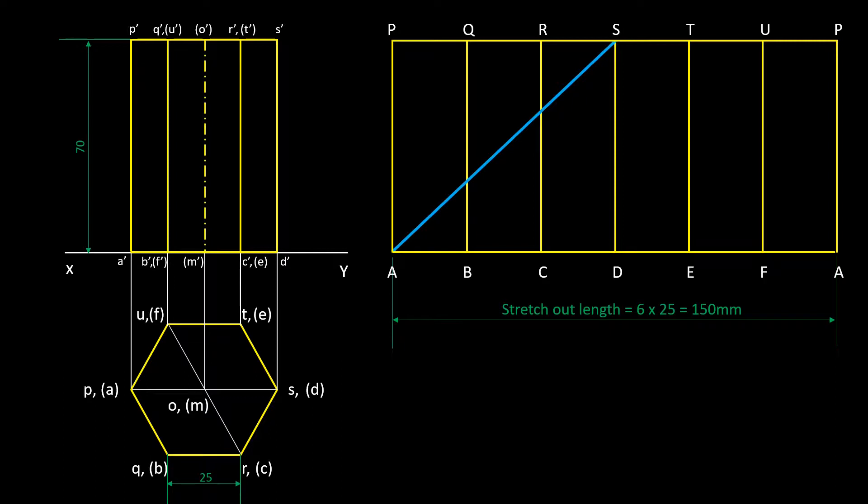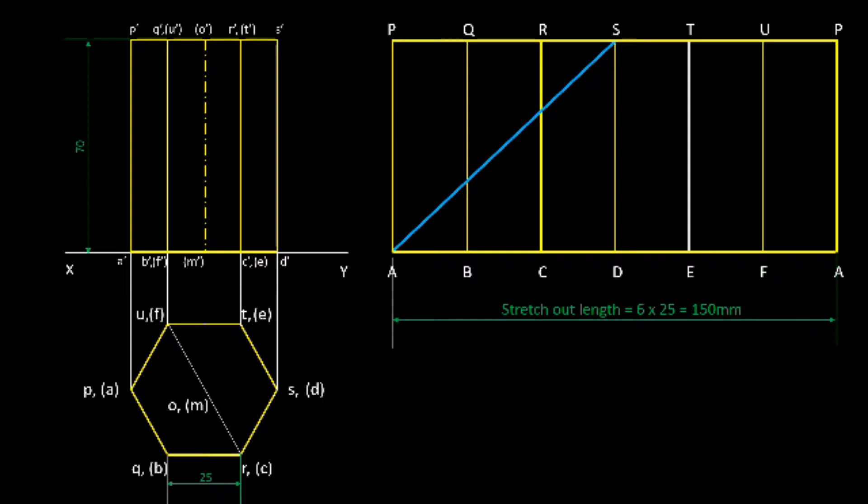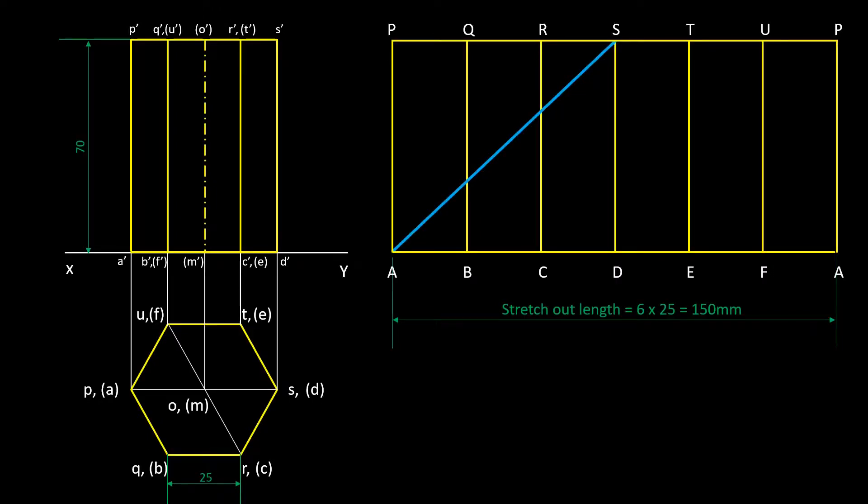Now let's find the shortest path on the prism. Mark the points on the edges of the pattern. Let point 1 on the edge AP, point 2 on the edge BQ, point 3 on the edge CR, point 4 on the edge DS.